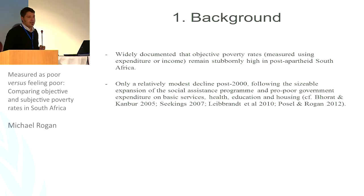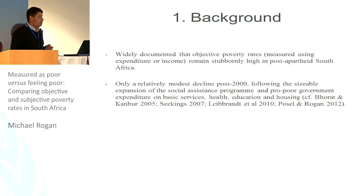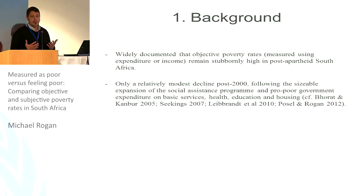I can see this is a fairly non-South African crowd, so I'll start with some context. It's widely documented that objective rates of income poverty in South Africa have remained stubbornly high in the post-apartheid period. We see a modest decline in income poverty in the 2000s after massive investment in social expenditure by the government.